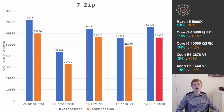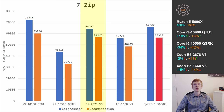In 7-zip compression and decompression — an application that uses almost as many cores as available — the Core i9 QTB1 only beats the Ryzen 5 5600X by 10% and 6%. The Core i5-10500 QSRK loses 34% and 42%. The Xeon E5-2678v3 produces almost identical performance to the Ryzen 5 5600X — its 12 cores and 4-channel memory give it a slight advantage. The Xeon E5-1660v3 loses 15% and 14% in compression and decompression.